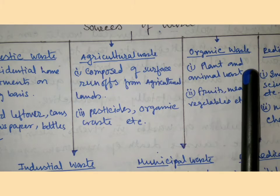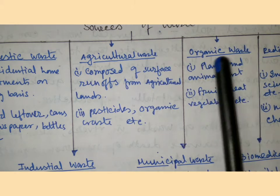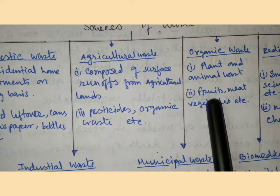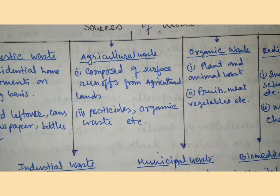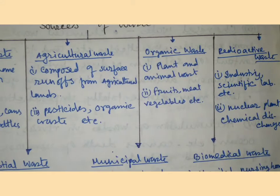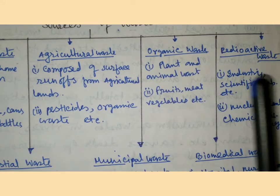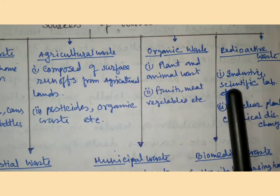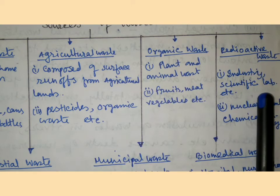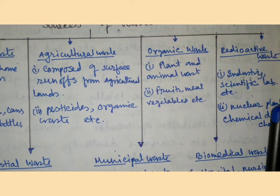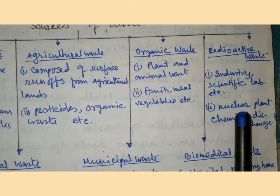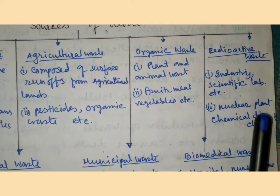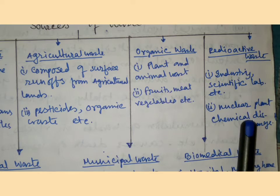Organic waste comes from plant and animal sources — for example, fruits, meat, and vegetables. Radioactive waste comes from industries, scientific labs, etc. Examples of radioactive waste include nuclear plant waste and chemical discharges.